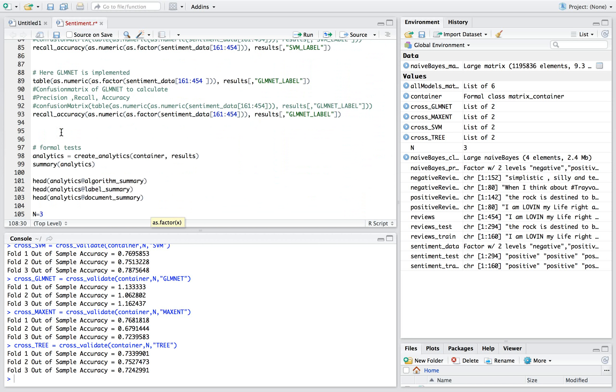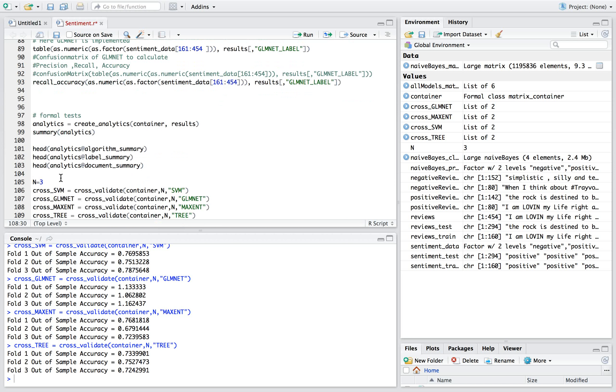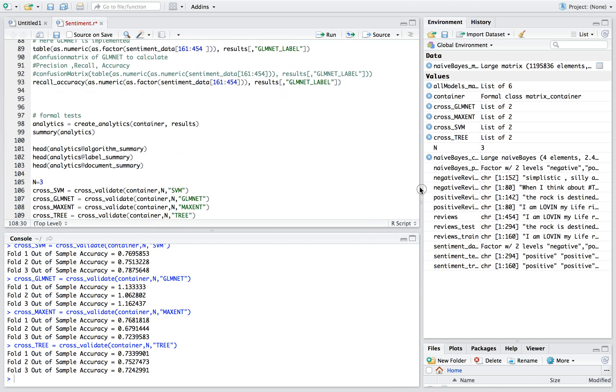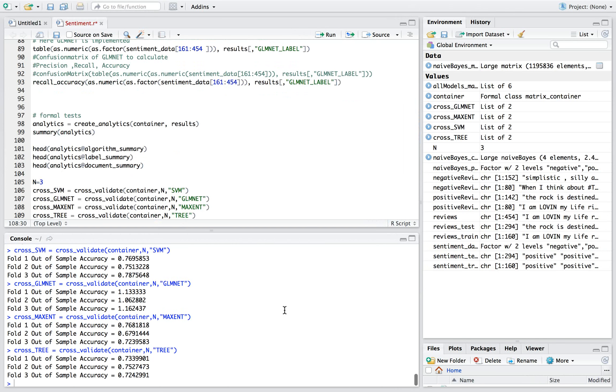Here, the formal tests are performed. And we also perform a k-fold validation. Here, k is 3. On the right, you can see the training set and its results. On the console, you can see some of our observations.